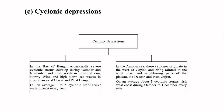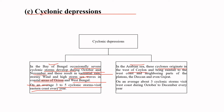Next are the cyclonic depressions. They originate in the Bay of Bengal and Arabian Sea. In the Bay of Bengal, severe cyclonic storms occasionally develop during October and November, resulting in torrential rain, stormy winds, and high storm sea waves in the coastal areas of Odisha and West Bengal. On average, three to five cyclonic storms visit the eastern coast every year. In the Arabian Sea, cyclones originate west of Sri Lanka and bring rainfall to the west coast, the Deccan plateau, and even Gujarat — on average three cyclonic storms per year, from October to December.